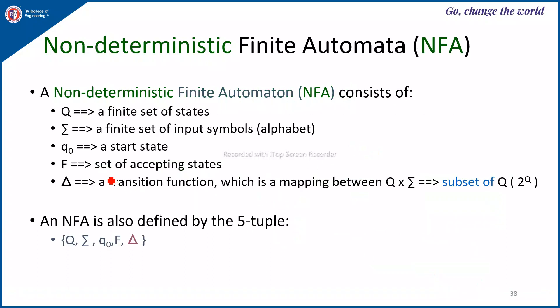Coming to the definition, it has the same Q, sigma, delta, Q0, F. Only the delta mapping will be changing. Here delta maps from Q cross sigma to set of states which is 2 power Q. Whereas in case of previous DFA, it was mapping to a single state. Here it is set of states, so it is 2 power Q. It is the same five parameters.